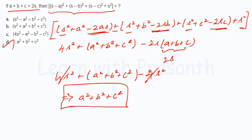The answer is a² + b² + c², which is option D. This is a straightforward expansion — expand each bracket, collect the 4s² terms, and use the substitution a+b+c = 2s to cancel them out.